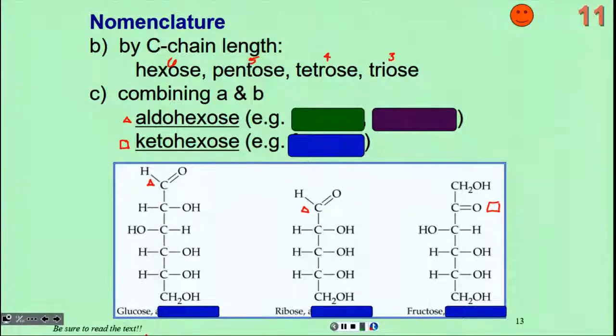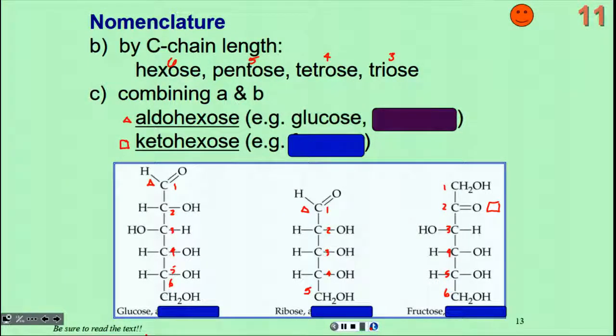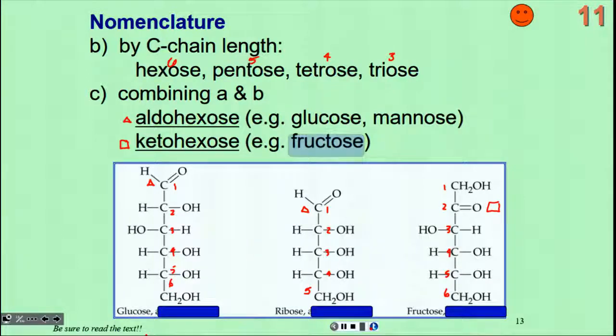Remembering, and we'll talk about this more, that aldehydes are always numbered starting with their aldehyde carbon. So one, two, three, four, five, six for glucose. One, two, three, four, five for ribose. One, two, three, four, five, six - so glucose and fructose are in fact hexoses, and ribose would then be a pentose. Glucose is in the aldohexose list, mannose was on the previous slide, also a six-carbon aldehyde sugar, and the ketohexose here is fructose.